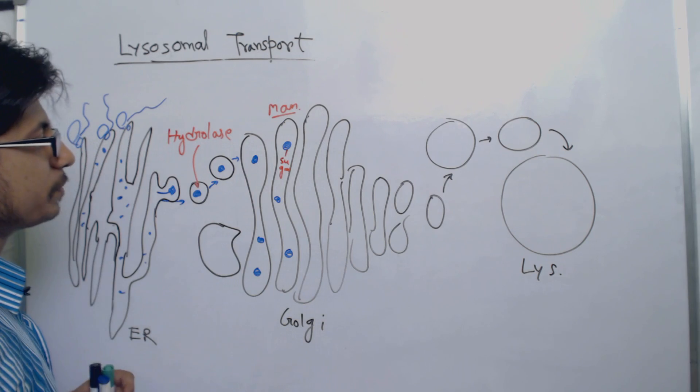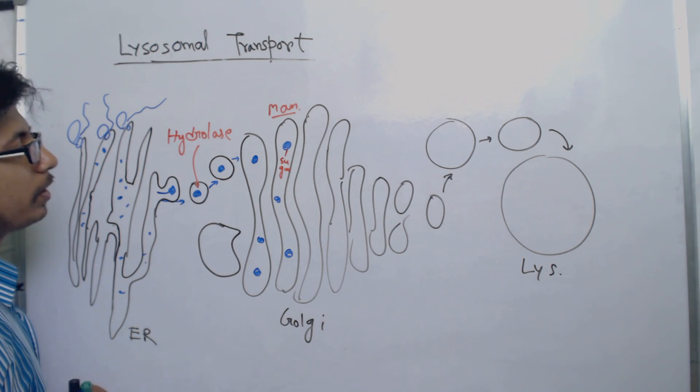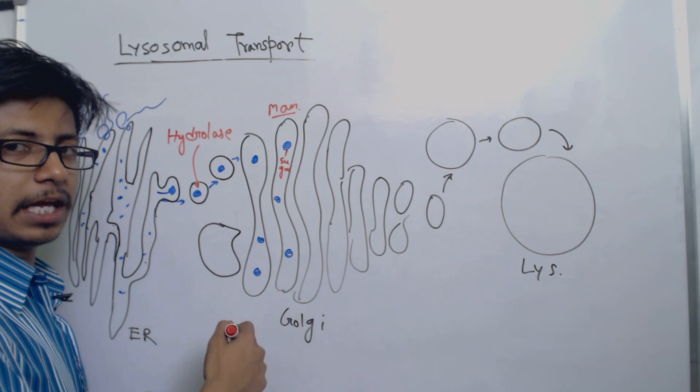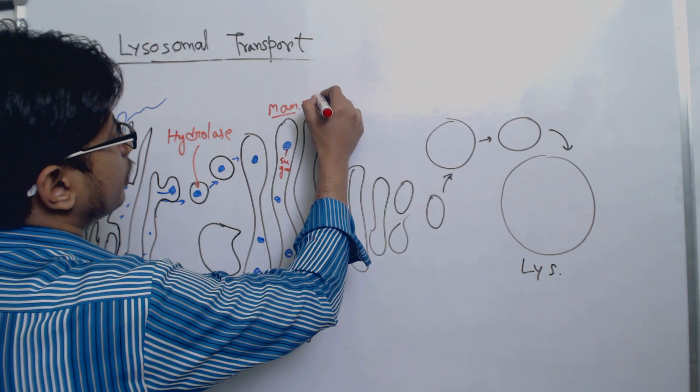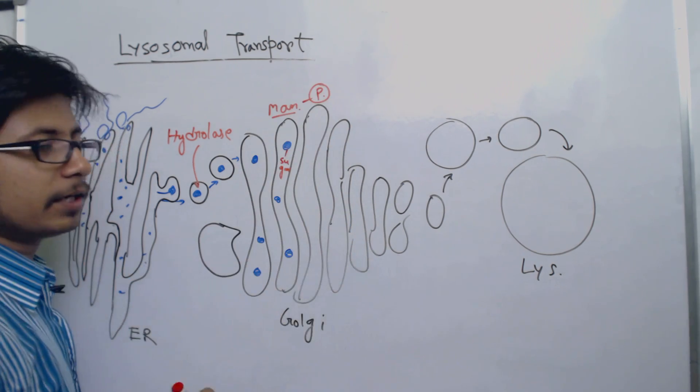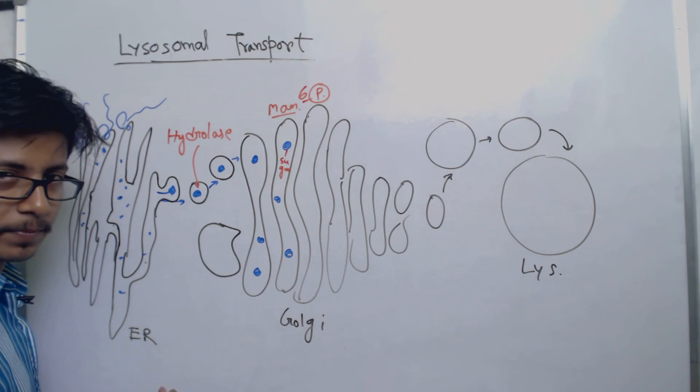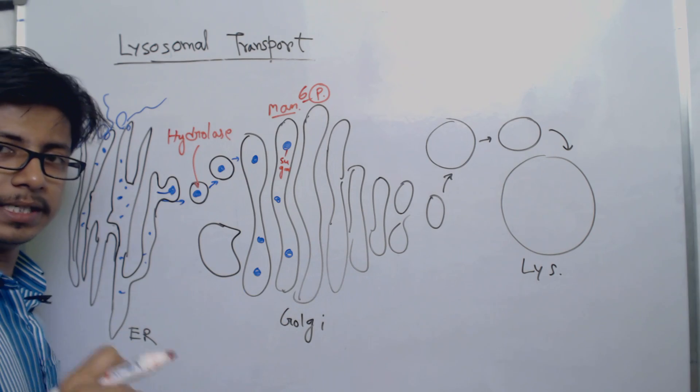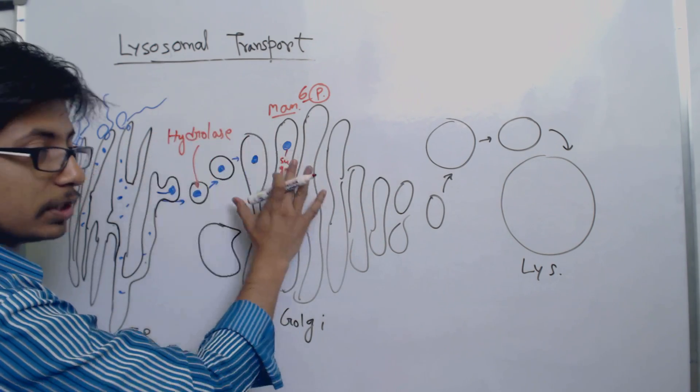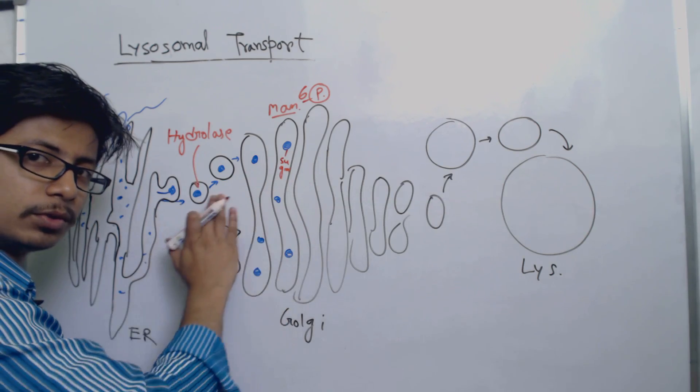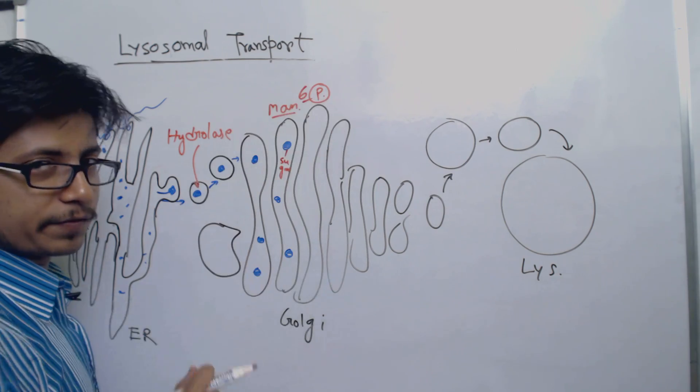And not only the addition of mannose, but also there is another modification, that is the modification of mannose itself: phosphorylation of mannose. So the mannose gets phosphorylated and converted into mannose 6-phosphate. Mannose 6-phosphate is formed in the structure of the hydrolase enzyme, and that alteration takes place in the Golgi apparatus during the movement of the protein through the Golgi channel or Golgi network.